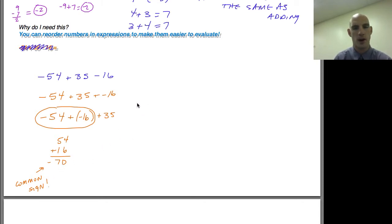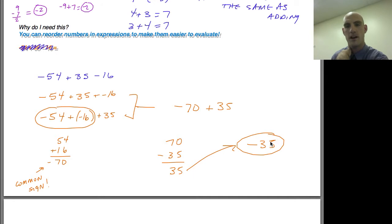So now my new problem becomes -70+35. Well I know that 35 is half of 70, and so I can just easily say two different signs. So I've got 35 and I keep the sign of the larger absolute value. So -35 is my answer. I reordered it to make the numbers easier to add for me.